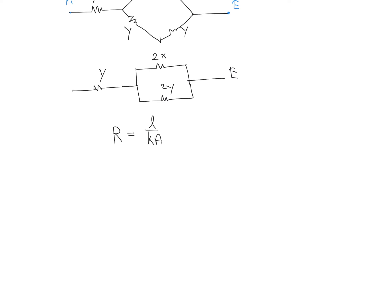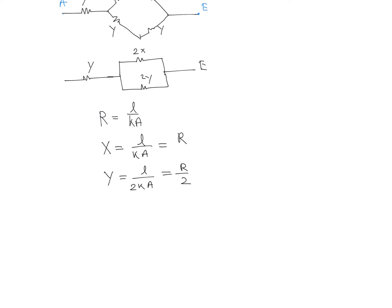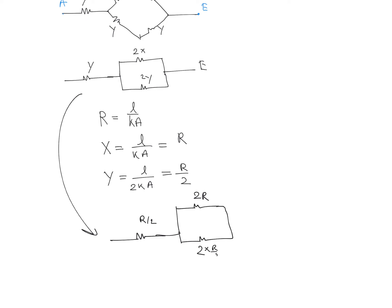If we let R = L/(K·A), then X = R and Y = R/2. Substituting into the circuit: the first branch has resistance R/2 (which is Y). The series combination 2X = 2R, and the series combination 2Y = 2·(R/2) = R. So the parallel combination is between 2R and R.